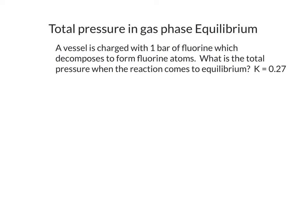Let's apply our understanding of equilibrium concepts to solve a gas phase equilibrium problem. We have a vessel charged with one bar of fluorine that decomposes to form fluorine atoms, and we want to know the total pressure at equilibrium. The first thing we always need to do is start by writing the equilibrium reaction — fluorine in the gas phase decomposes to form fluorine atoms.